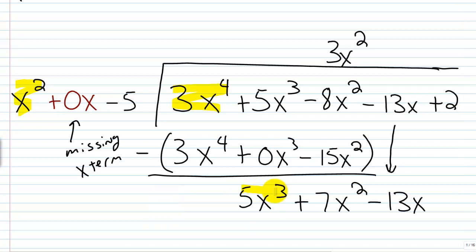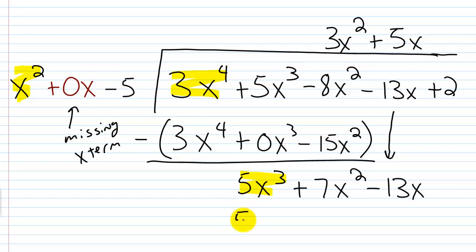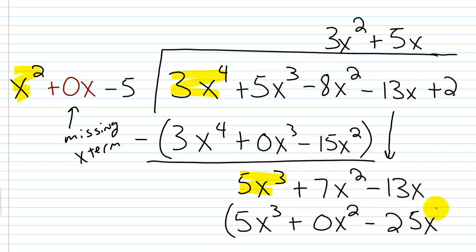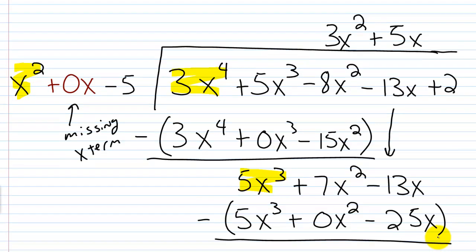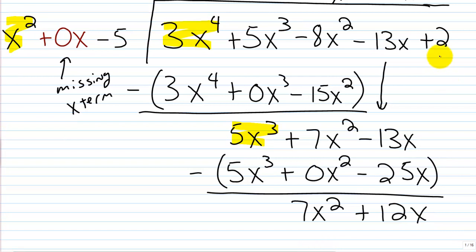Leading term into leading term again: x squared goes into 5x cubed, which is 5x times. So plus 5x. Now multiply: 5x times x squared is 5x cubed; 5x times 0x is plus 0x squared; 5x times negative 5 is negative 25x. Subtracting: 5x³ minus 5x³ is 0; 7x² minus 0x² is 7x²; and negative 13x minus negative 25x gives positive 12x. Bring down the 2.